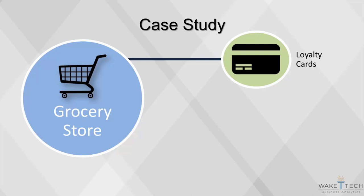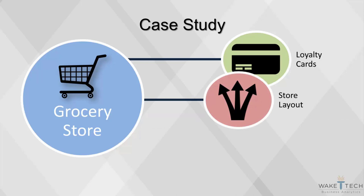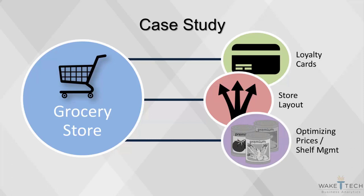When a customer stops frequenting the store, the grocer can mail coupons with aggressive offers. The layout of a grocery store is constantly being changed to maximize customer spending. This is why the milk section is always on the opposite side of the produce section, so customers will have to traverse past every aisle to get to the two most commonly bought items. Each shelf is also analyzed to find the ideal arrangement. More expensive items are typically placed at or around eye level, while cheaper products will be on the top or bottom shelves.